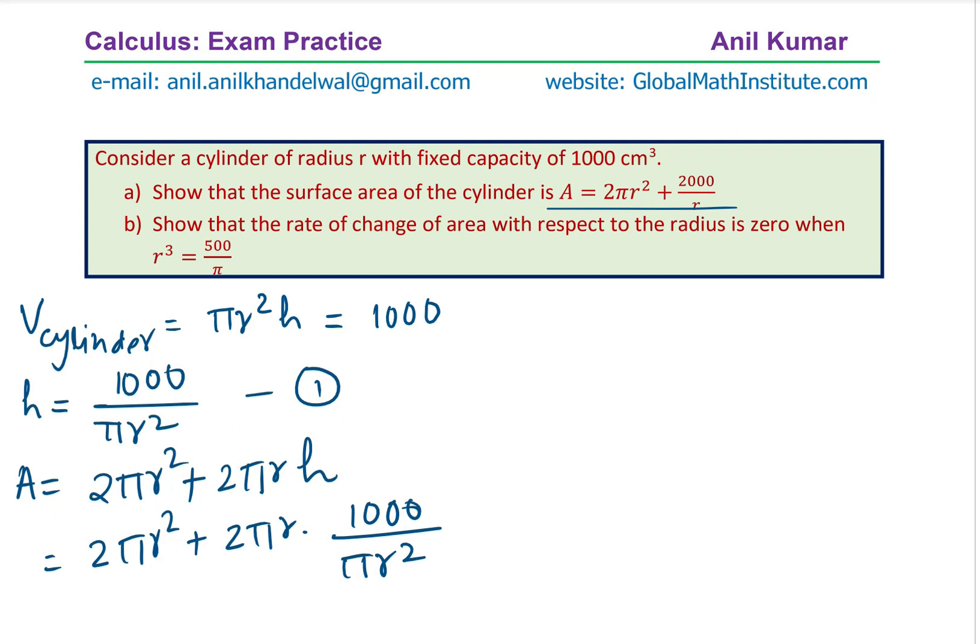Now, this can be simplified. We can cancel π, cancel one of the R's and rewrite the expression. As area, this is the surface area, which is 2πR² + 2000/R. And I think that is what we wanted. So that is how you can prove it.